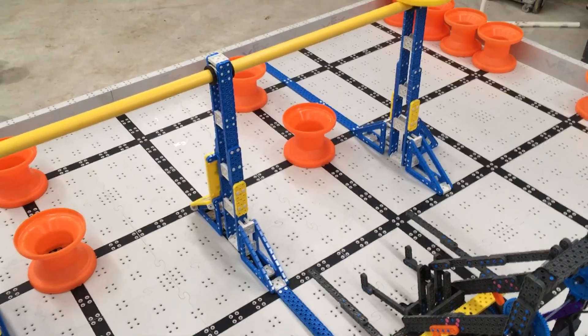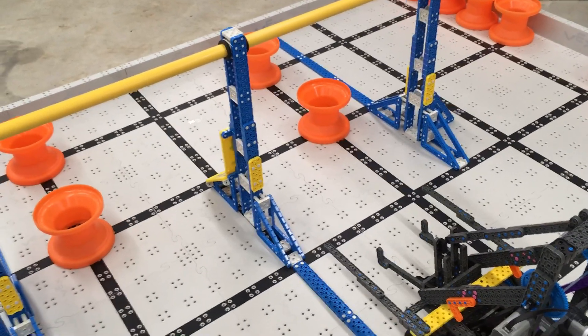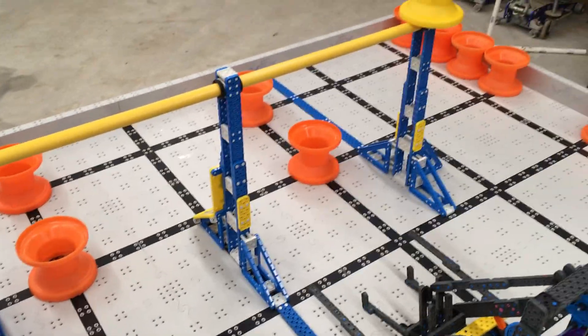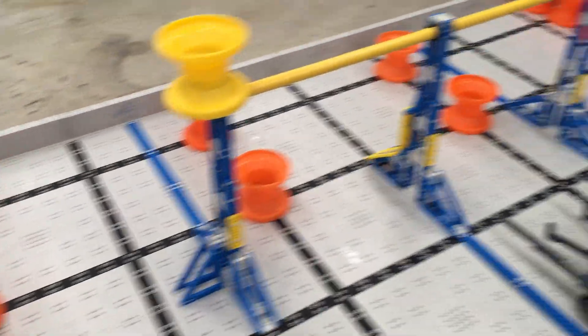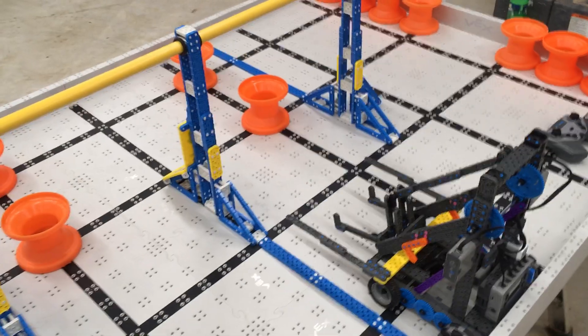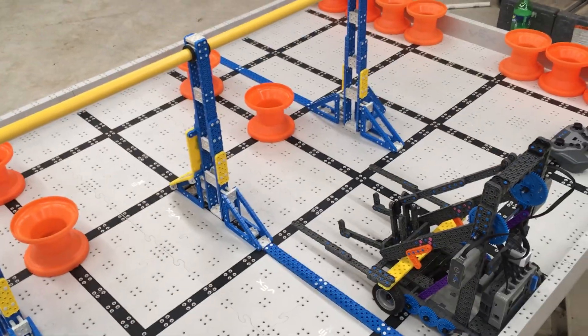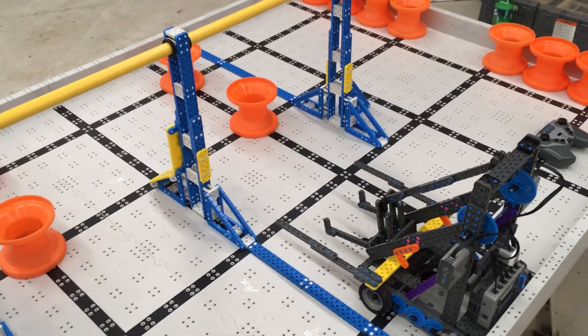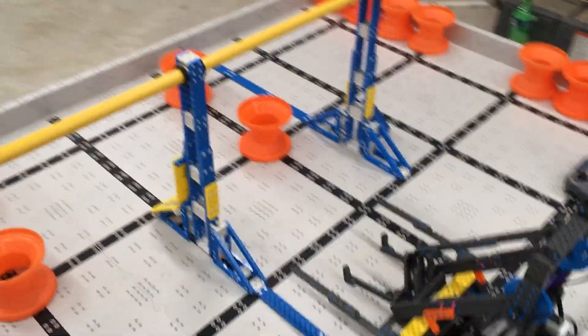But what if we could guarantee that the robot goes precisely one inch forward or two inches forward, or one inch backwards or two inches backwards. Or if you want it to turn, we could guarantee that the robot turns precisely five degrees, 10 degrees, or so on. Well, that's what we're going to do right now.